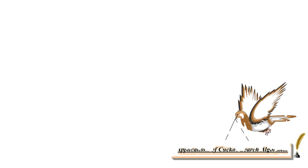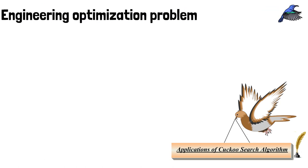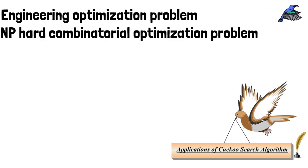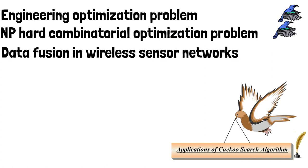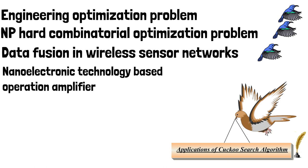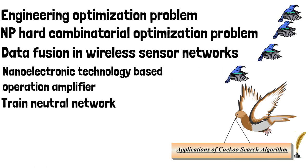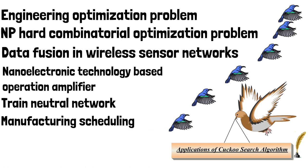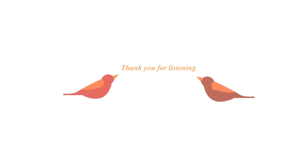The applications of cuckoo search in engineering optimization problems have shown its promising efficiency. Some applications are: Engineering Optimization Problems, NP-Hard Combinatorial Optimization Problems, Data Fusion in Wireless Sensor Networks, Nano-Electronic Technology Based Operational Amplifiers, Training Neural Networks, Manufacturing Scheduling, and Nurse Scheduling Problems.